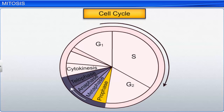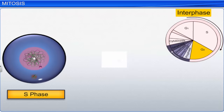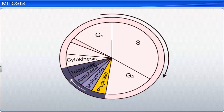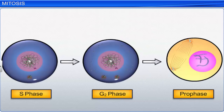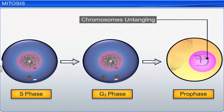Prophase is the first phase of mitosis and follows the S and the G2 phases of interphase. During the S phase, the DNA synthesizes or replicates, and in the G2 phase, the cell continues to grow, but the DNA molecules formed are intertwined and not distinct. However, during prophase, chromatin condensation, or the untangling of the chromosomal material, takes place, and the centriole that had duplicated during the S phase starts to move towards the opposite poles of the cell.